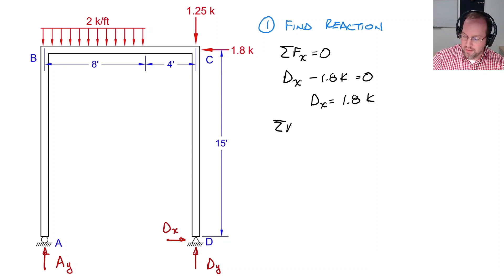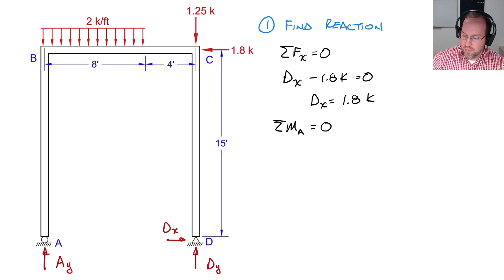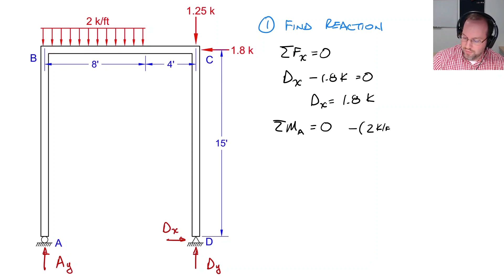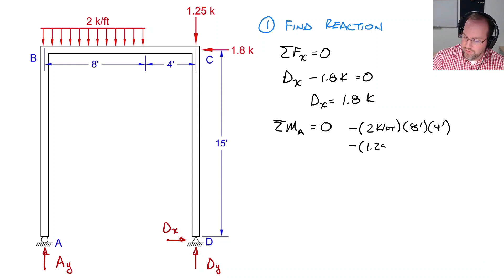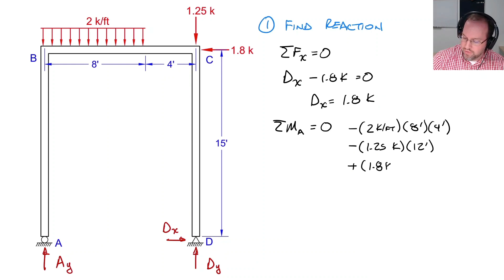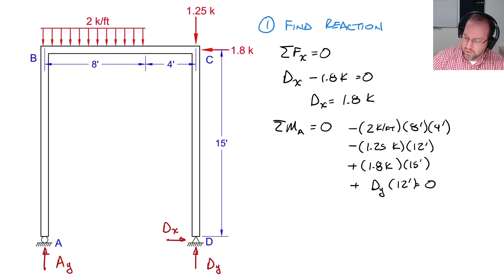Next, taking the sum of moments about point A equal to zero to solve for D_y. The distributed load causes a clockwise moment — it's 2 kips per foot over 8 feet with a moment arm of 4 feet. There's also a concentrated load of 1.25 kips with a moment arm of 12 feet, both negative (clockwise). The 1.8 kip force gives a positive moment with a 15-foot arm. Solving, D_y equals 4.33 kips.